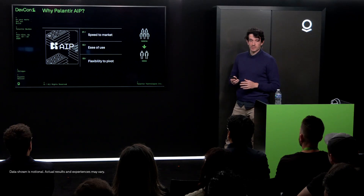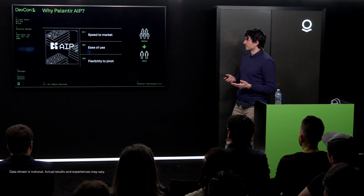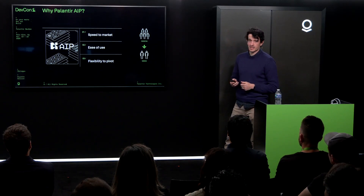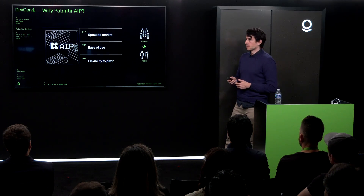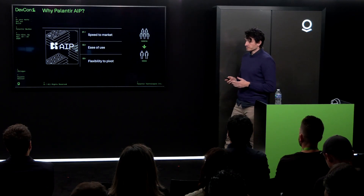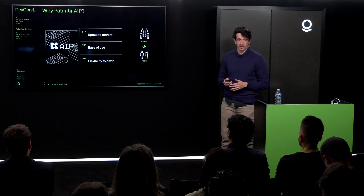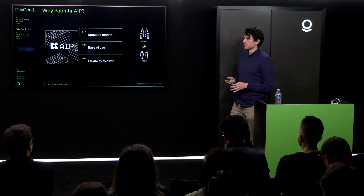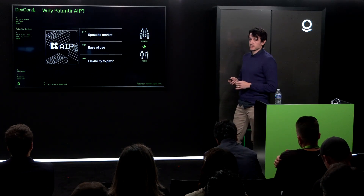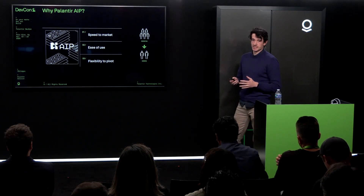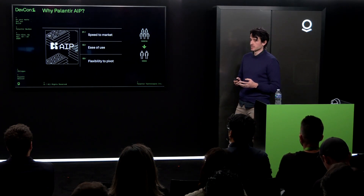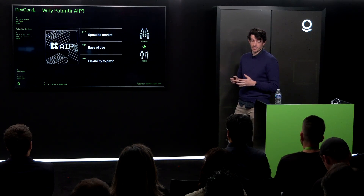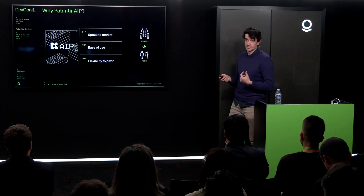So why do we use AIP? For us it's three things: speed to market, ease of use, and flexibility to pivot. As a startup we need to be able to pivot to our users' needs really quickly, and that's exactly what we get from AIP. We've actually been building things and getting them into production in weeks with a smaller team than it's taken us months to do with our current team.